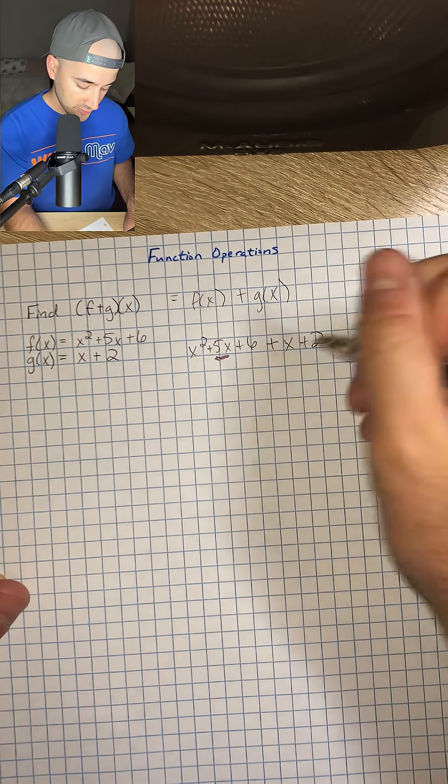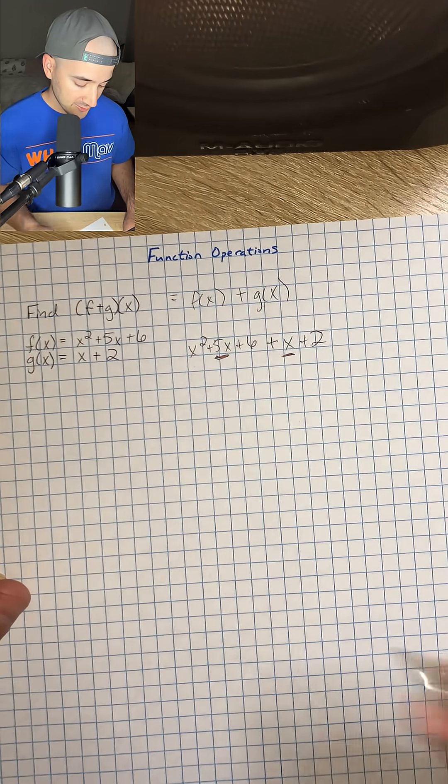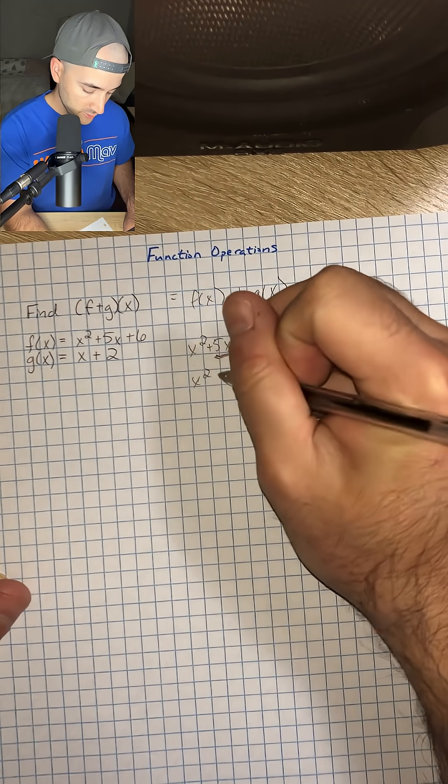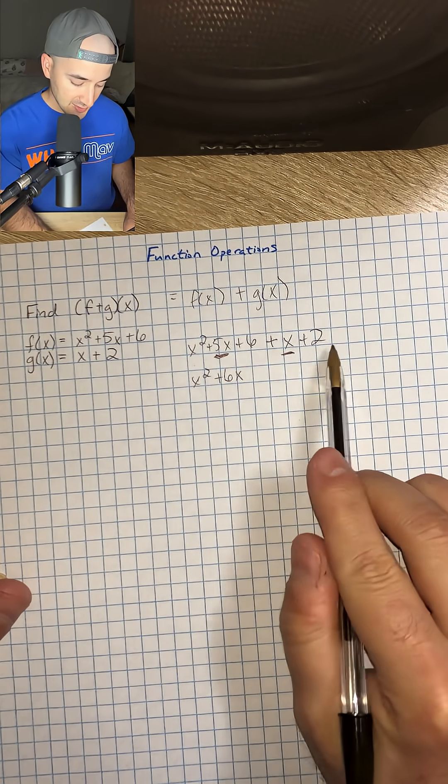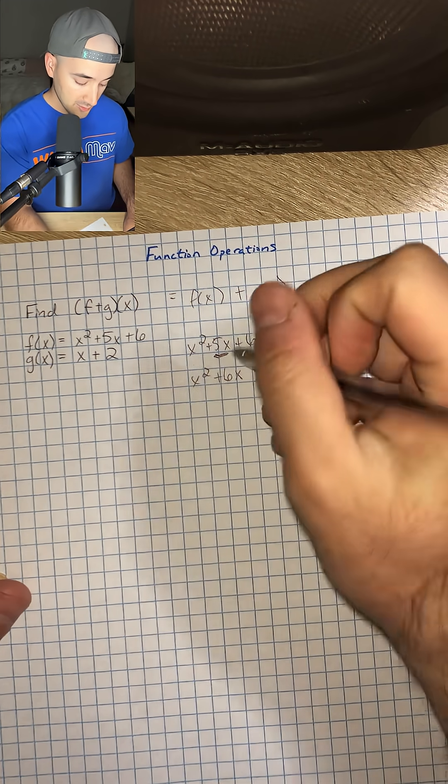5x and x are going to make 6x, so I'm going to write x squared plus 6x, and then 6 and 2 are going to combine to 8.